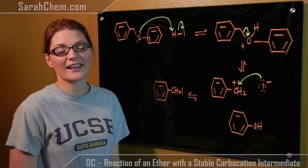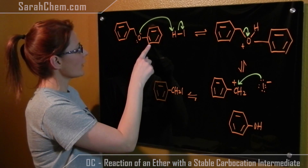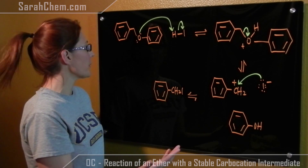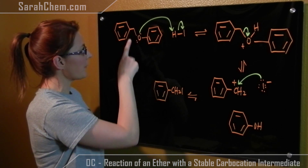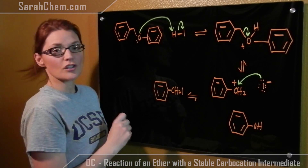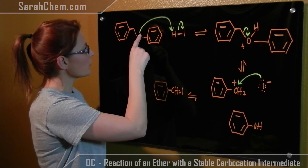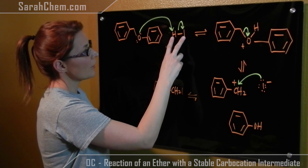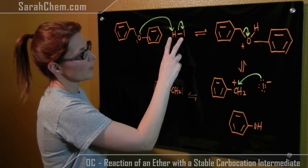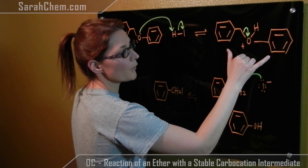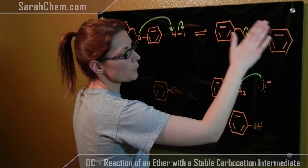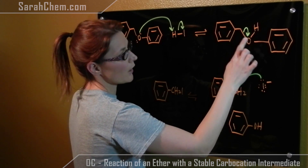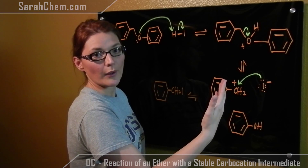So let's take a look at this mechanism. Over here we have our ether. Remember, you can identify it's an ether because we have two R groups separated by an oxygen. The first step is that the oxygen with its lone pairs will come and attack this hydrogen, breaking the bond with the I. So what we form then is this protonated ether, which is now primed for one or the other of these bonds breaking and forming a carbocation.